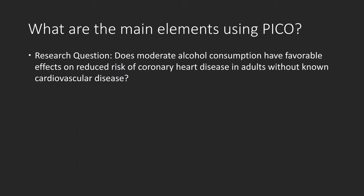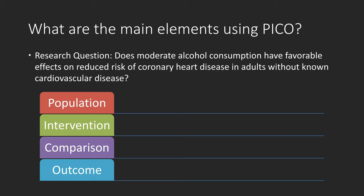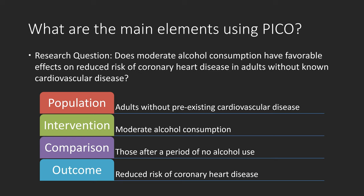Let's look at an example. Does moderate alcohol consumption have favorable effects or reduced risk of coronary heart disease in adults without known cardiovascular disease? Using PICO: population is adults without pre-existing cardiovascular disease; intervention is moderate alcohol consumption; comparison is those after a period of no alcohol use; outcome is reduced risk of coronary heart disease.